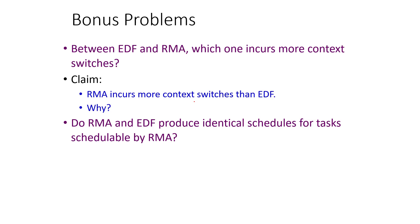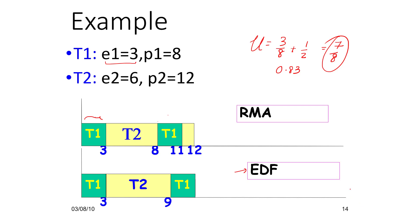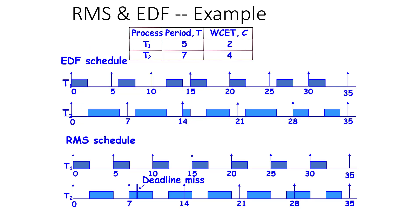Which incurs more context switches — EDF or RMA? One claim is that RMA incurs more context switches, primarily because it doesn't take deadlines into account and switches context based on static priority whenever a task arrives. Consider a task set schedulable under RMA: do RMA and EDF produce identical schedules? The hint is in the earlier slides. A few more examples of rate monotonic scheduling versus EDF are available — two tasks where EDF can schedule it but there are deadline misses in RMS.